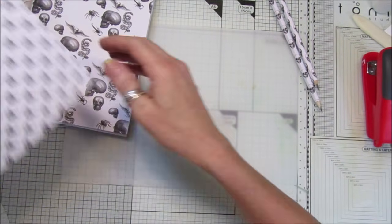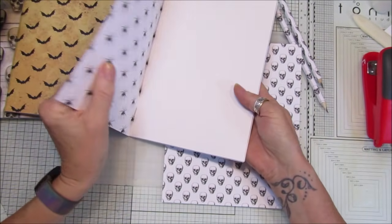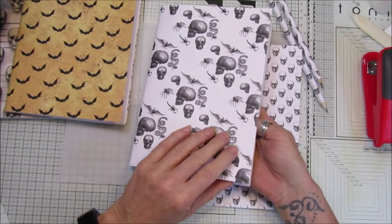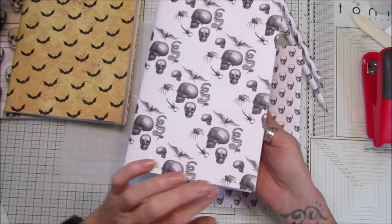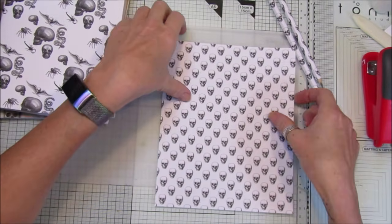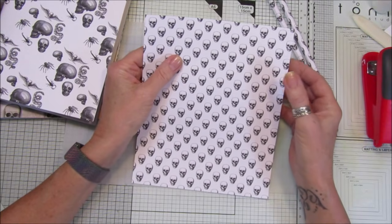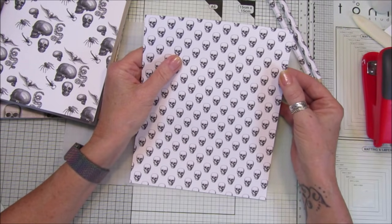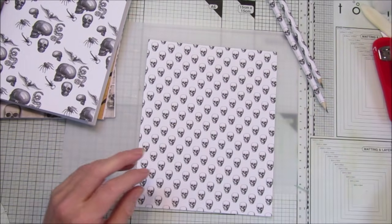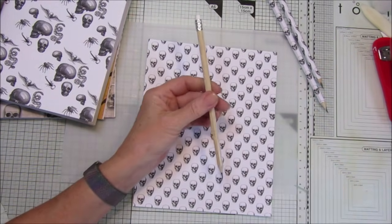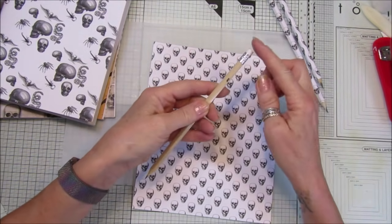This one has got little skulls on like this. I printed this paper on 250 GSM paper. This one here I've just printed onto really cheap copy paper, probably about 80 GSM or something like that. It's just a cheap one that I have.